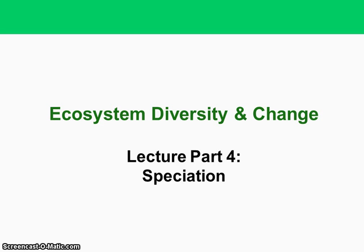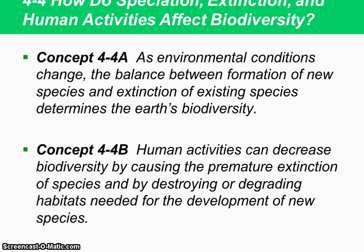Welcome to Lecture Part 4 of Ecosystem Diversity and Change. Today we're going to discuss how the rate of speciation — the creation of new species — and the rate of extinction of species, the balance has been off-kilter because of human activities and the fact that we are destroying and degrading habitats. This will, in the end, affect Earth's biodiversity.